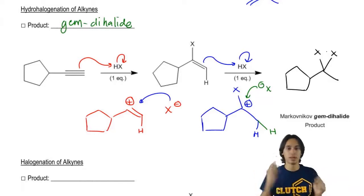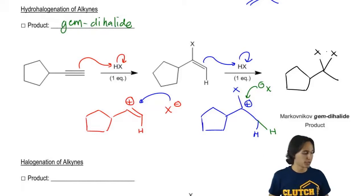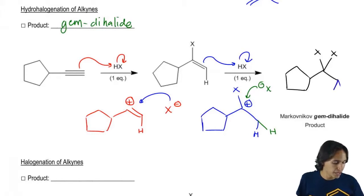So that's the geminal dihalide part and that's the Markovnikov part. And then I would have two H's that came from my addition reaction.